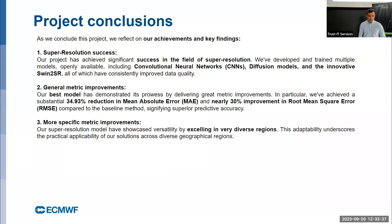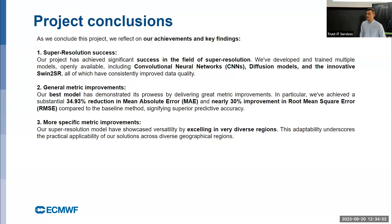The project conclusions: we achieved a super resolution success. We trained a convolutional neural network, a diffusion process, and a vision transformer to downscale ERA5 data to CERA resolution. There are clear metric improvements — 35% in mean absolute error and nearly 30% in root mean square error — and our model excels in diverse regions, from mountains to islands to coastal areas.